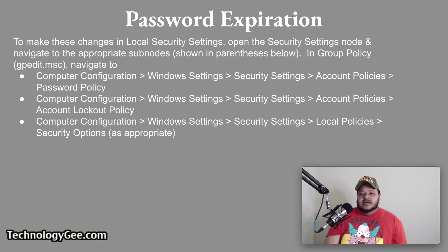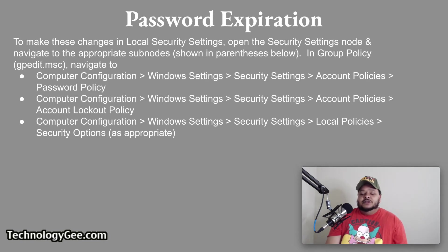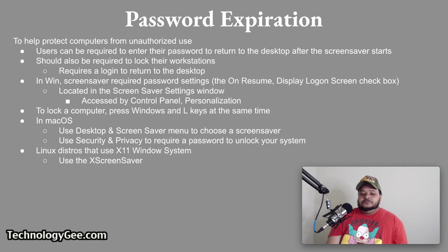For account lockout, follow the same navigation steps but navigate to Account Lockout Policy at the end. For security options, navigate to Computer Configuration, Windows Settings, Security Settings, Local Policies, then Security Options, and make whatever changes you feel are appropriate to help protect computers from unauthorized use.